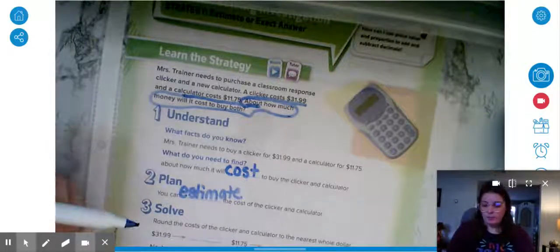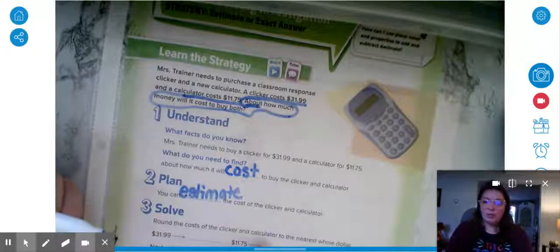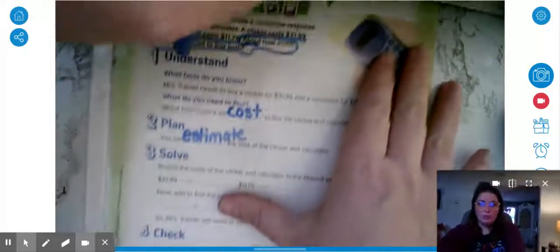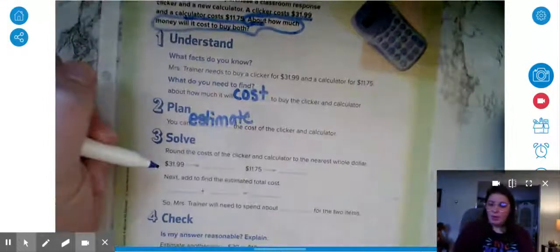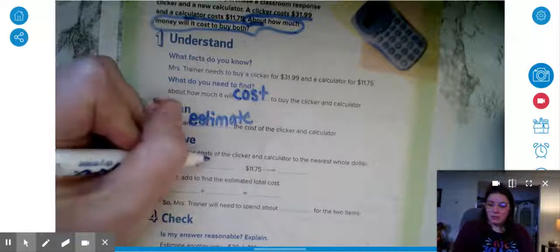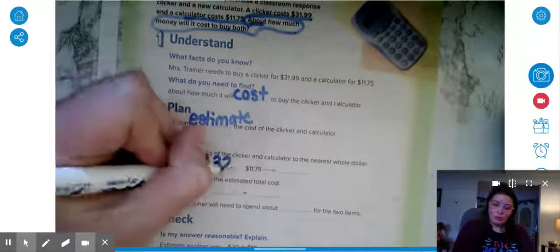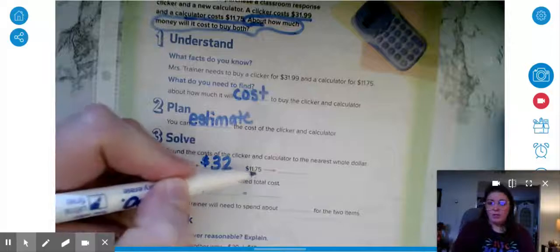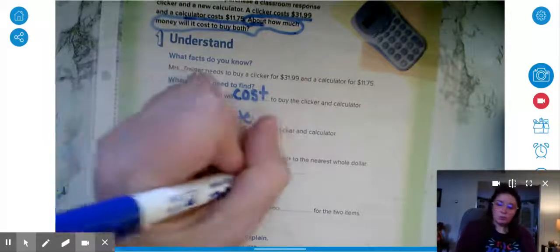Let's solve the problem. I'm going to round the costs to the nearest whole dollar. $31.99 is really close to $32, it's just a penny away. And $11.75 is really close to $12.